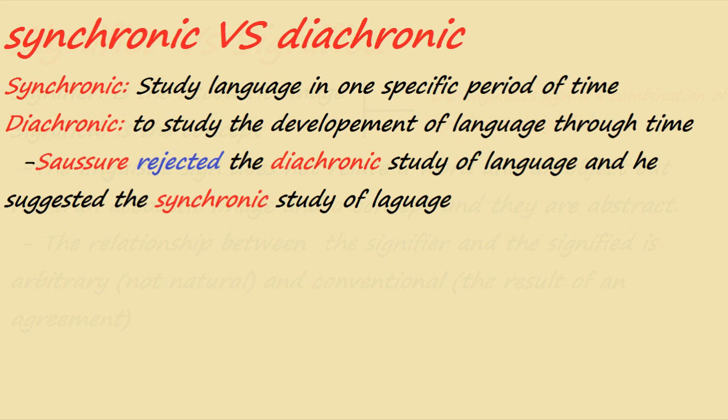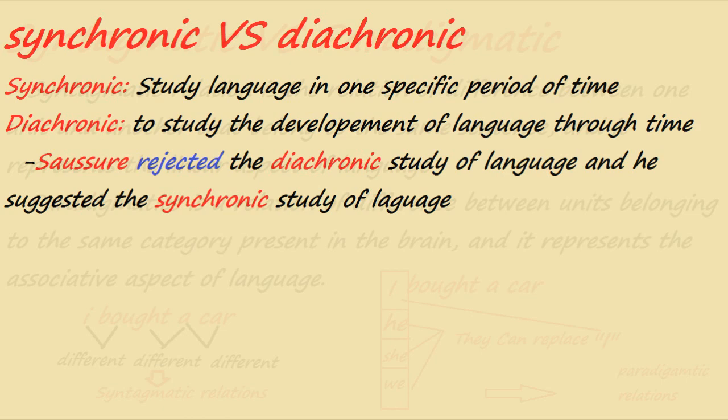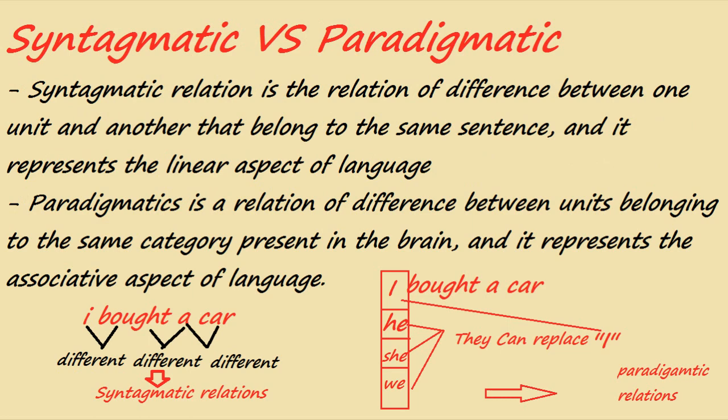The third dichotomy is synchronic versus diachronic. Synchronic means to study language in one specific period; diachronic, on the other hand, means to study the development of language through time. Saussure rejected the diachronic study of language — the historical development of language through time — and suggested that the synchronic study of language is more important, meaning to study language in a specific period of time.